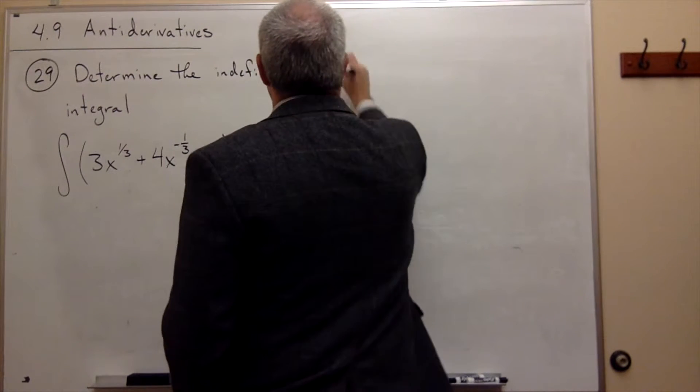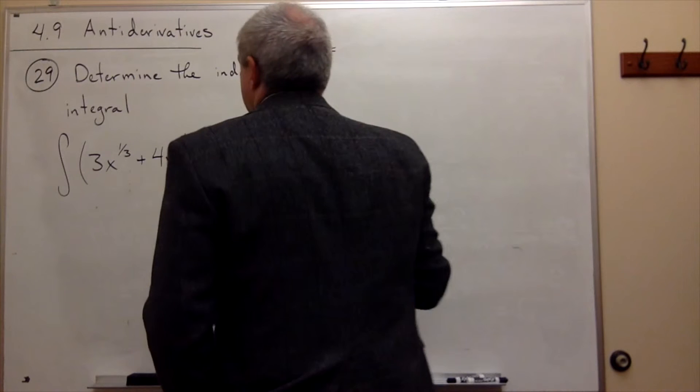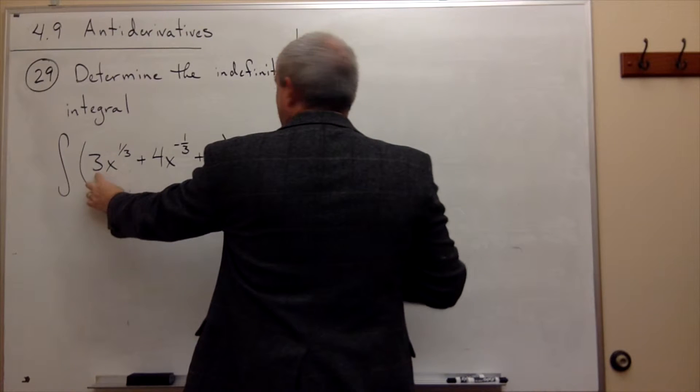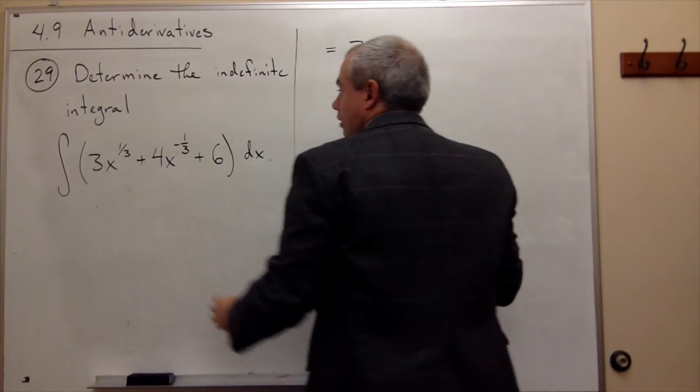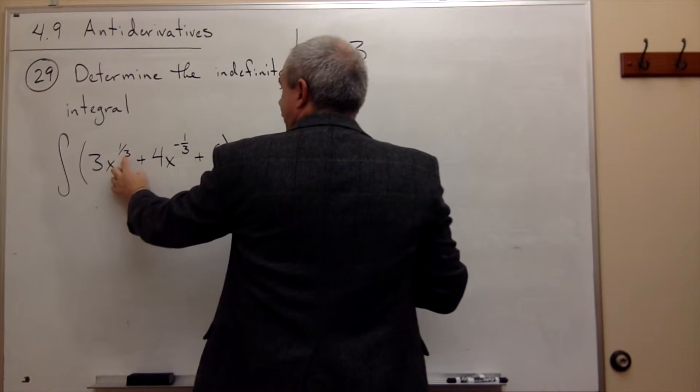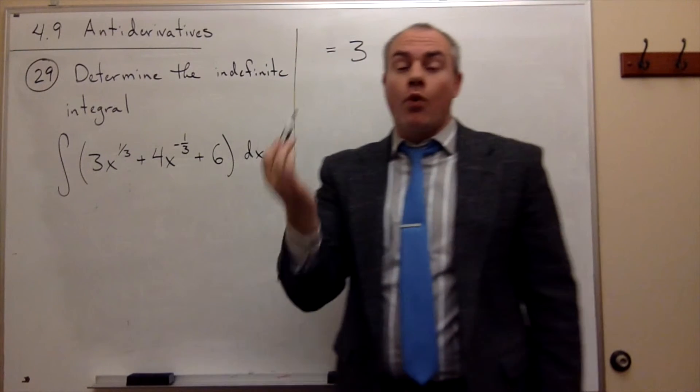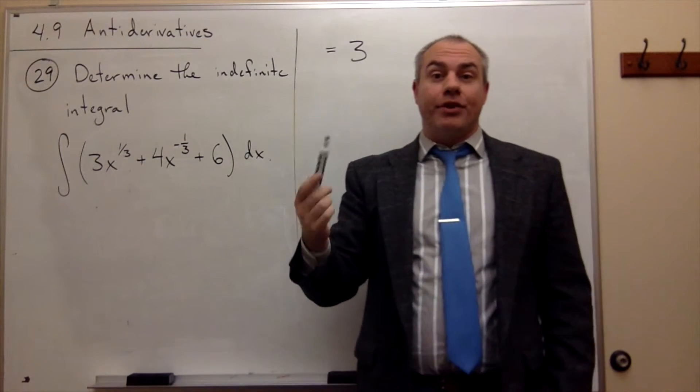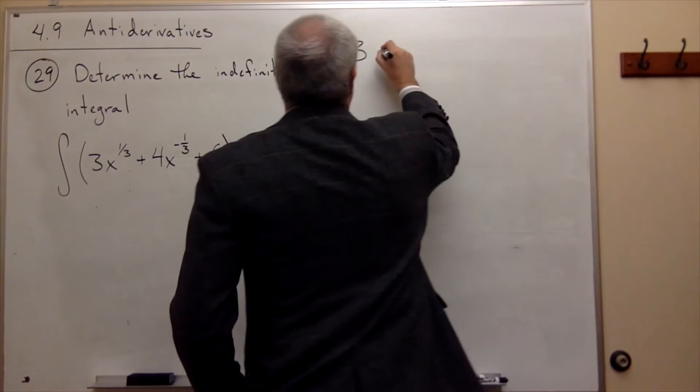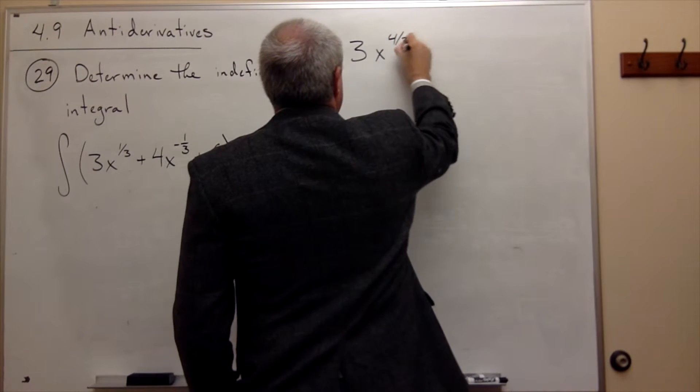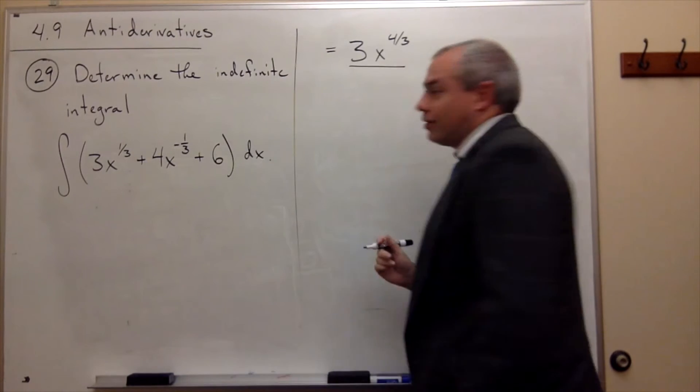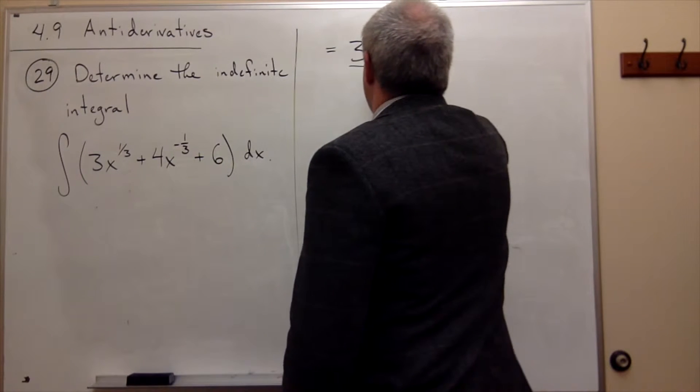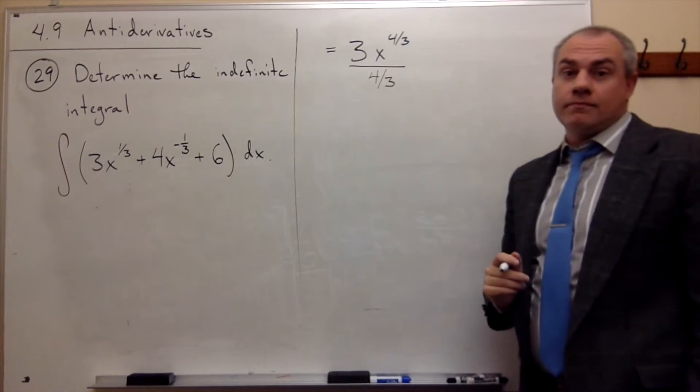So if I want to take this anti-derivative, then I want to take the anti-derivative first of 3x to the 1 third. So 3 is a constant, so I'm just going to leave it alone. Then I get the anti-derivative of x to the 1 third. Well, I want to add 1 to the power of x. So it's x to the 1 third, so I add 1. 1 third plus 1 is 4 thirds, so I get x to the 4 thirds. And then I want to divide the whole thing by the new power. And the new power is 4 thirds, so I divide by 4 thirds.